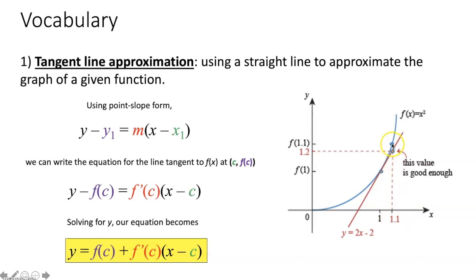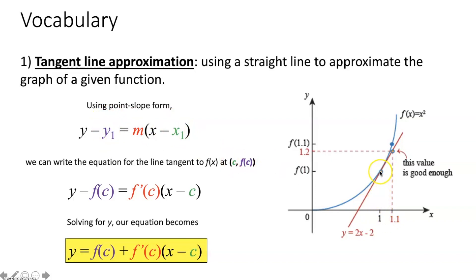So since we're trying to approximate our given function at x = 1.1, we're going to draw a tangent line to the curve at x = 1. If we can find the equation of that line, we can plug in 1.1 for x and get a y value really close to the y value of the original function. We start with point-slope form, plugging in the point c, f(c) for x₁, y₁. The slope m is the derivative of your function at that specific x value c — those mean the same thing.